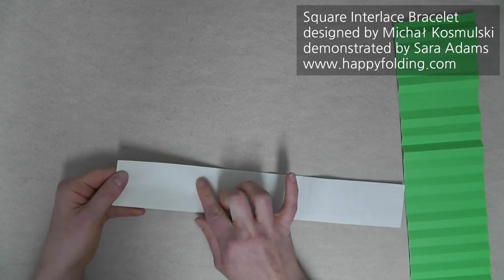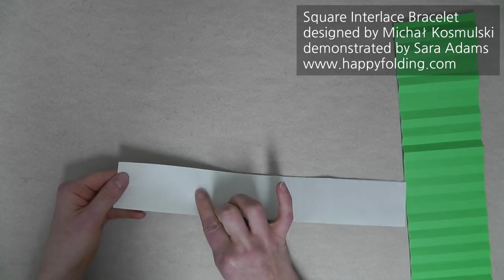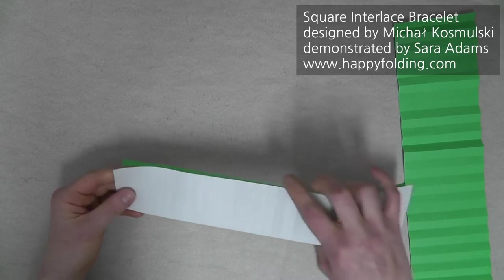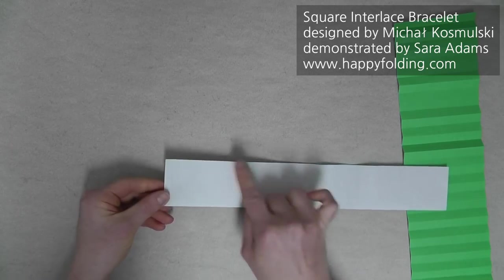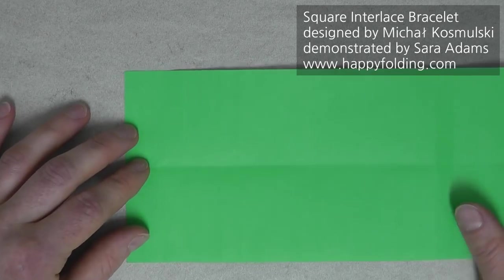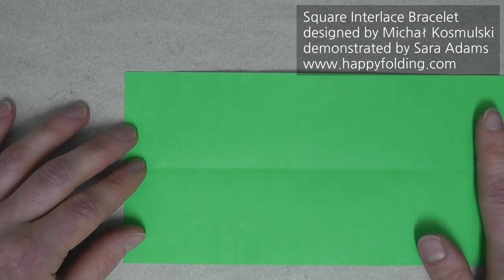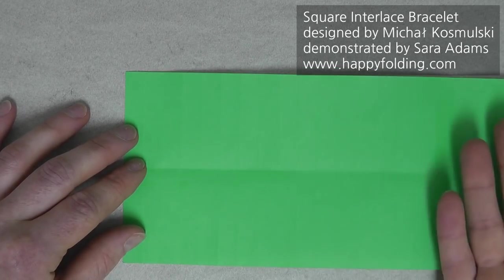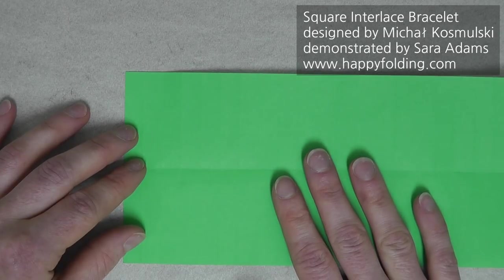Now we can use the divisions we already have to get the fifths, and for this, I'm just going to zoom in and show you this section. Now unfold, and now we're going to add diagonal creases to determine the tenths,